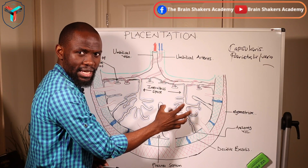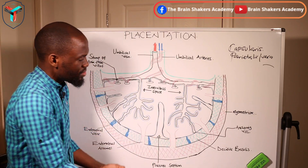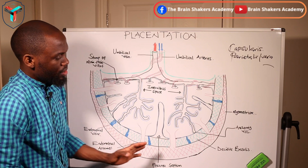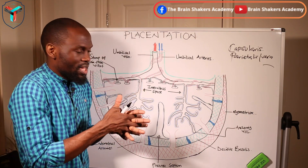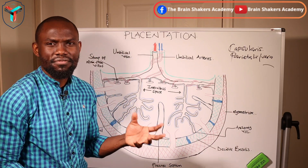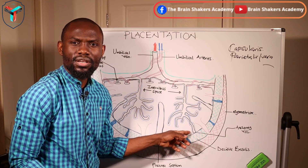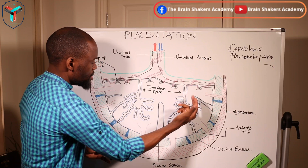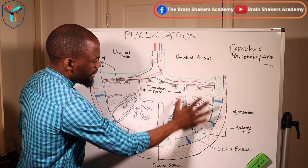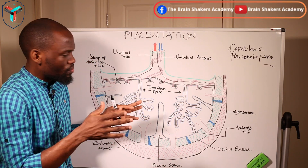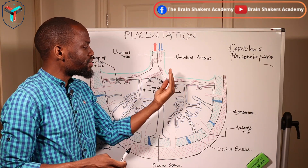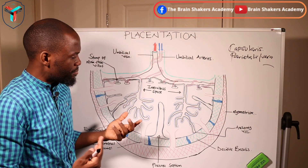These villi continue to embed the spiral arteries so that more blood supply comes into the area. As they continue to embed into the maternal blood supply, some of the villi are going to anchor and attach to the endometrium — these become what are known as anchoring villi. Some villi are not going to anchor into the endometrium and will remain floating within the lake of maternal blood supply formed by the penetrating villi, allowing them to absorb relevant nutrients and oxygen.